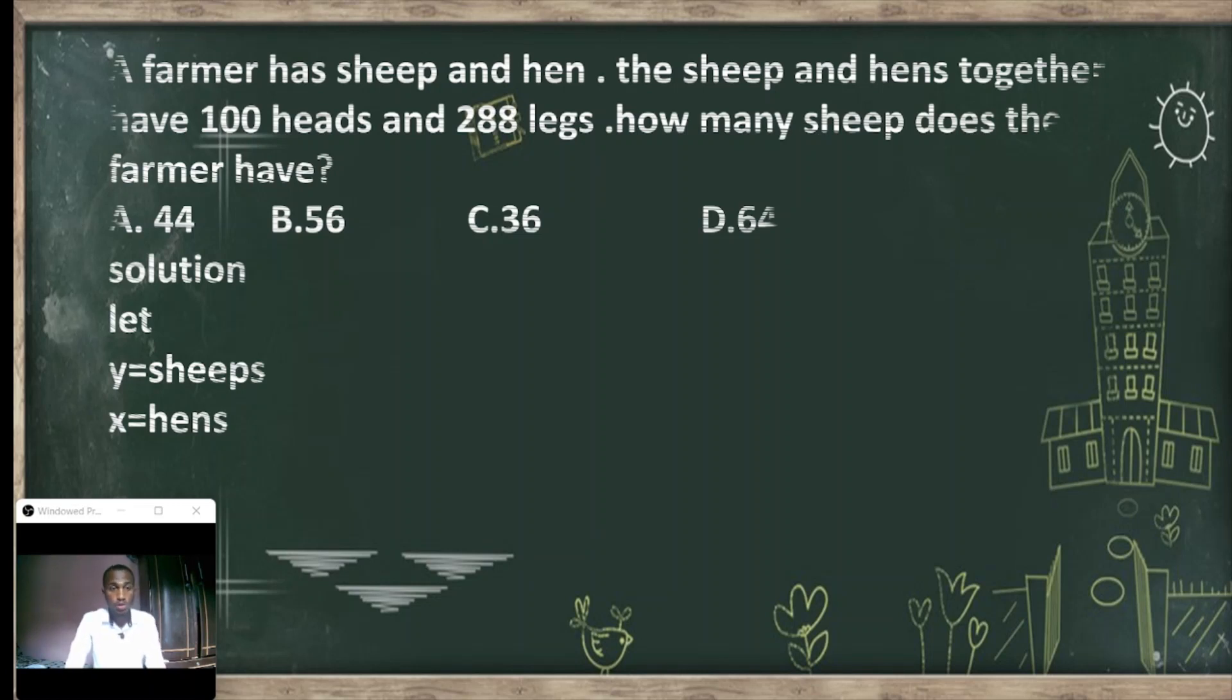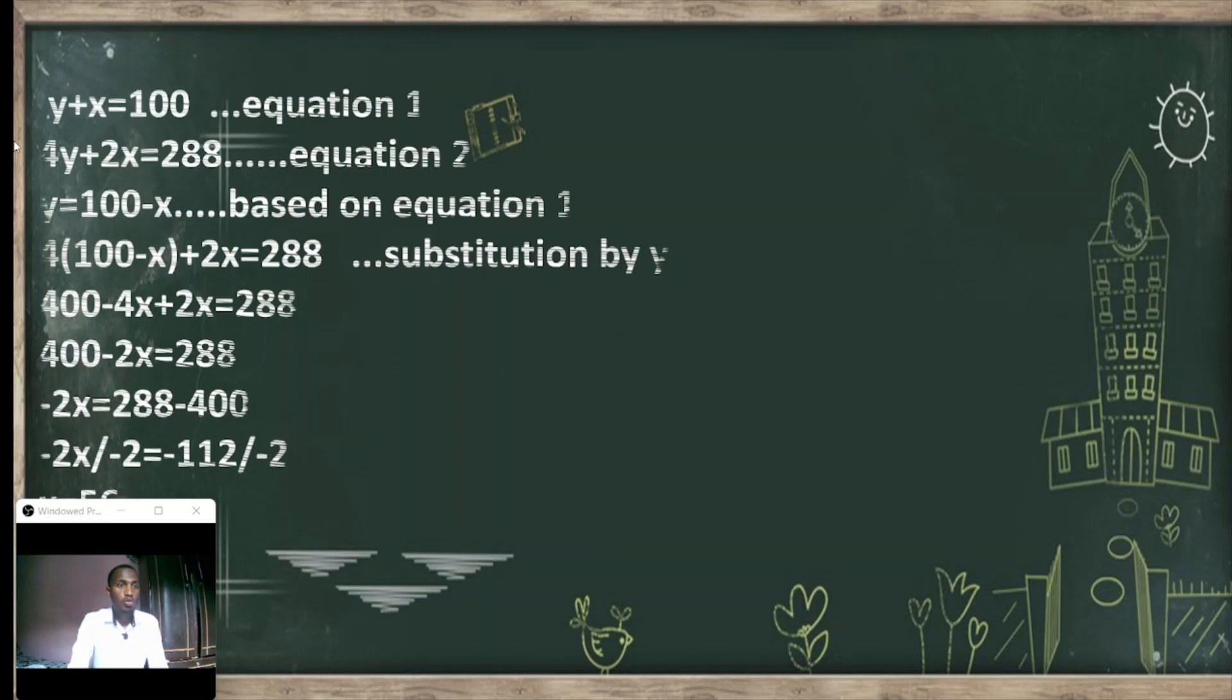And 288 legs. Sheep has four legs, so for sheep we say 4y plus 2x equals 288. We'll say the first one x plus y equals to 100, equation 1. X plus y equals to 100 because the sum of the sheep and hen heads is 100.